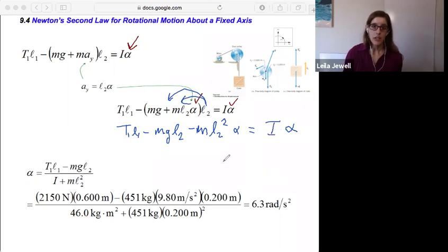So now all I need to do is add this to the other side and then I can factor out the alpha and divide by everything else. So I'd have alpha times this I plus everything besides the alpha here. So m L2 squared.